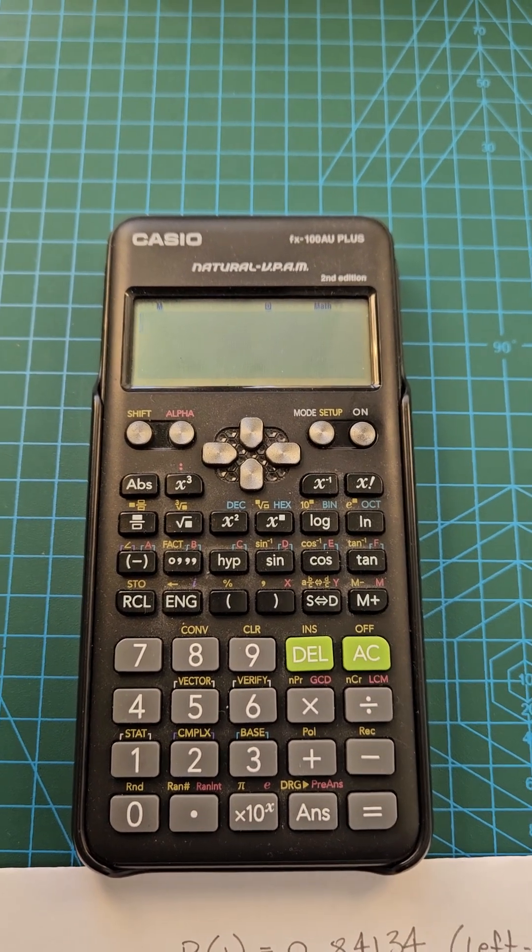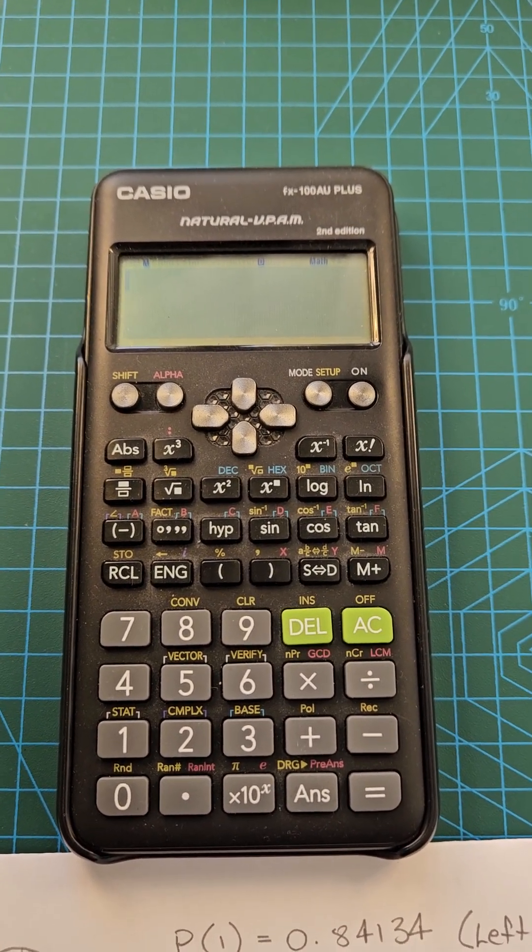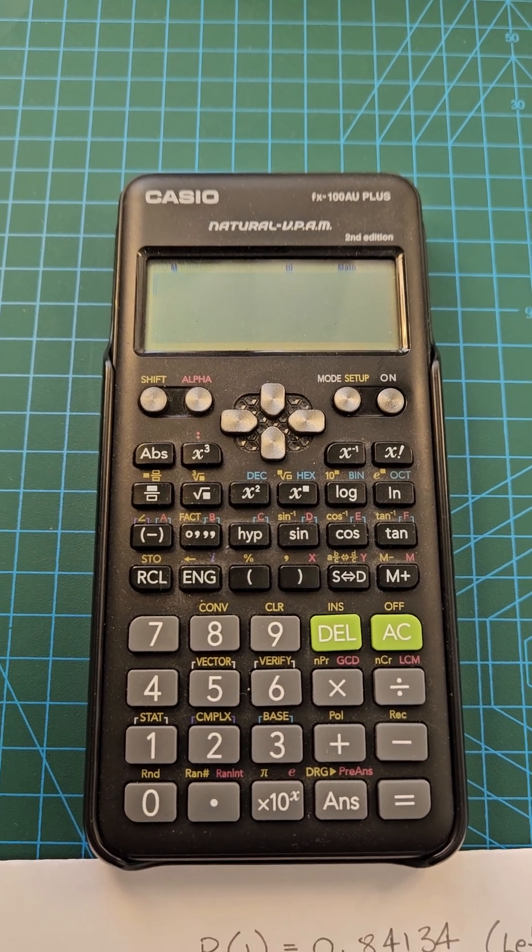To find a normally distributed probability for a given z-score, we can use the following statistics function on a Casio scientific calculator.